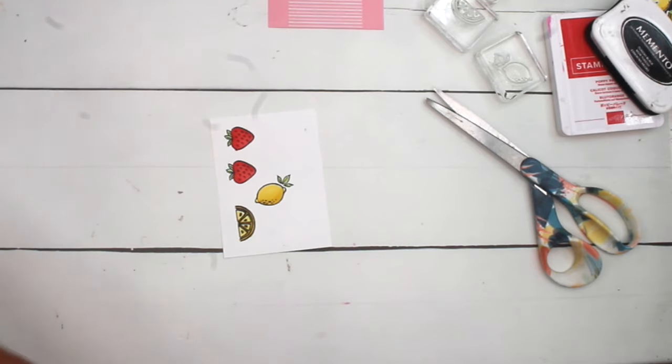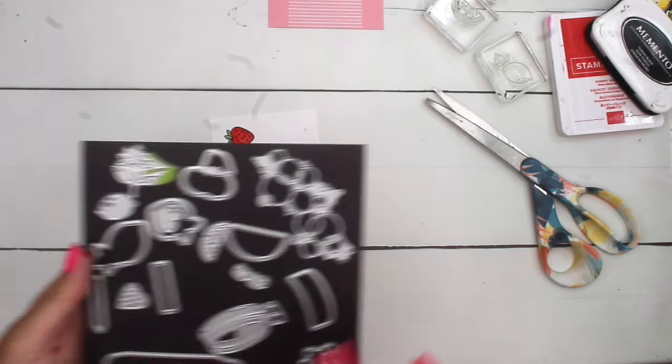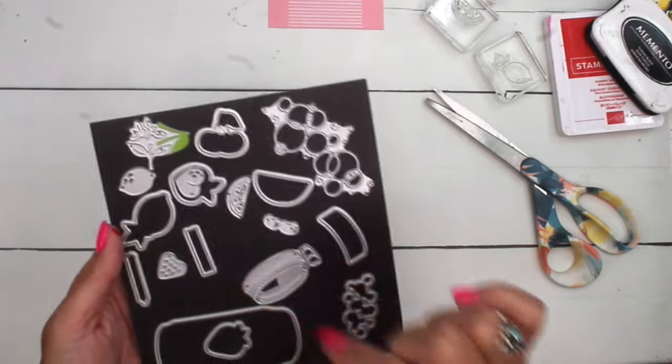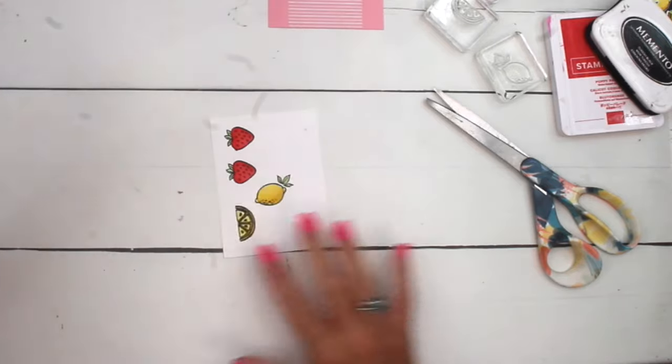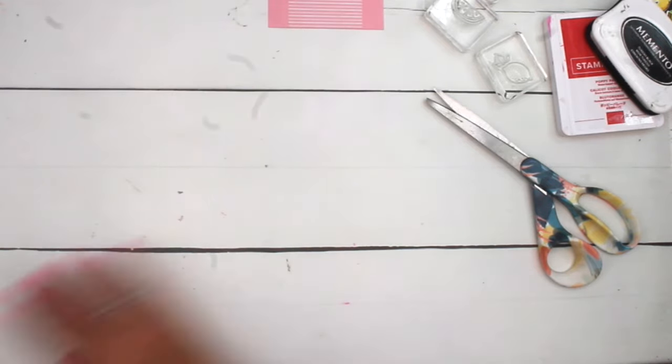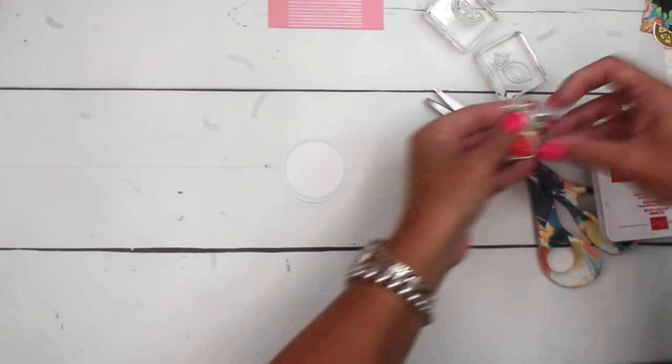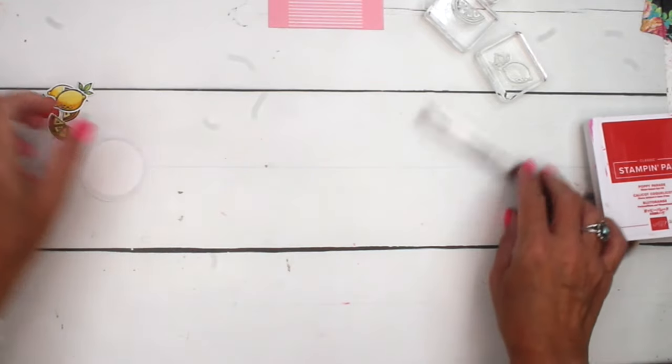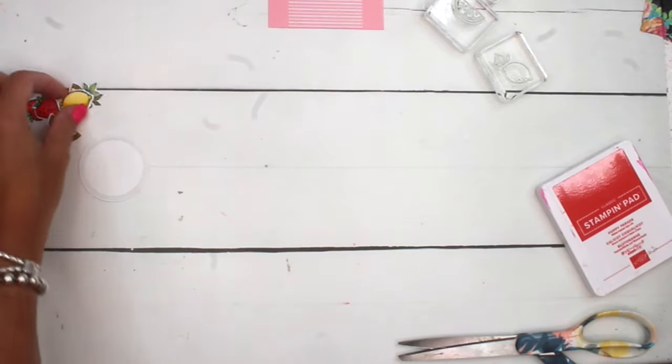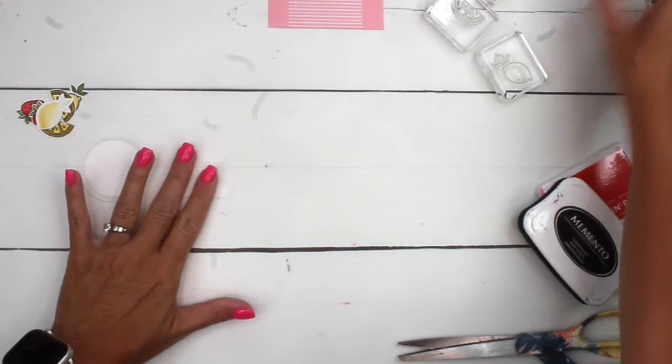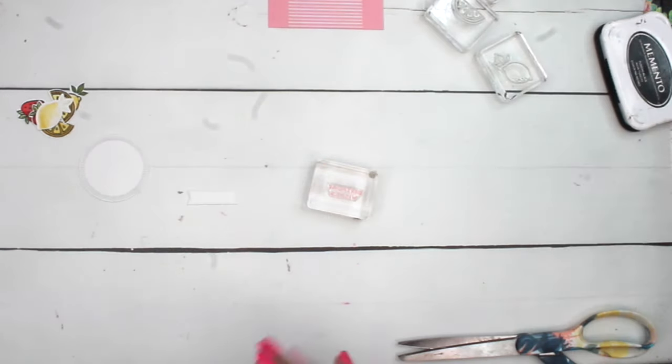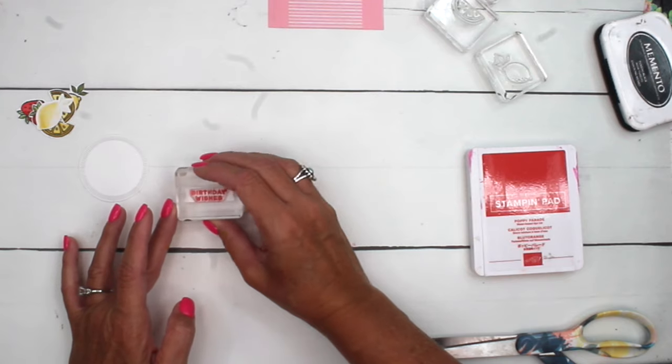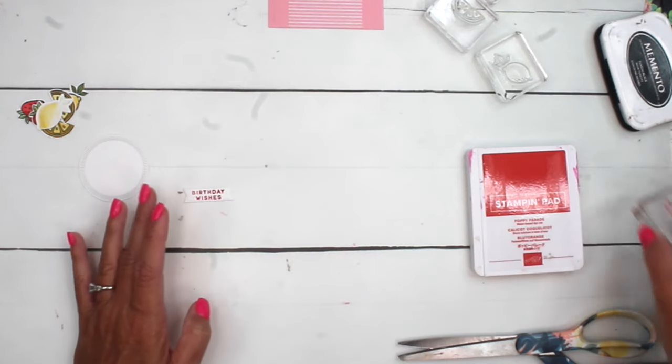Now take your dies. You're going to use this die and this die and the strawberry, which is right here. And you're going to cut those out. I've already done that for us today. And I have a few extra pieces. We're going to line them up. You also need a basic white banner for the sentiment. So let's stamp that. This banner is from the Style of Shapes Dies. I'm going to stamp that.